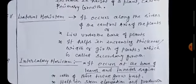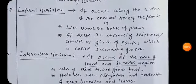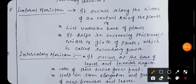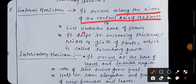Second type of meristematic tissue is the lateral meristem which occurs along the sides of the central axis of the plants or just below to the bark of trees. And you know what is bark that is the rough and tough upper structures of stem.